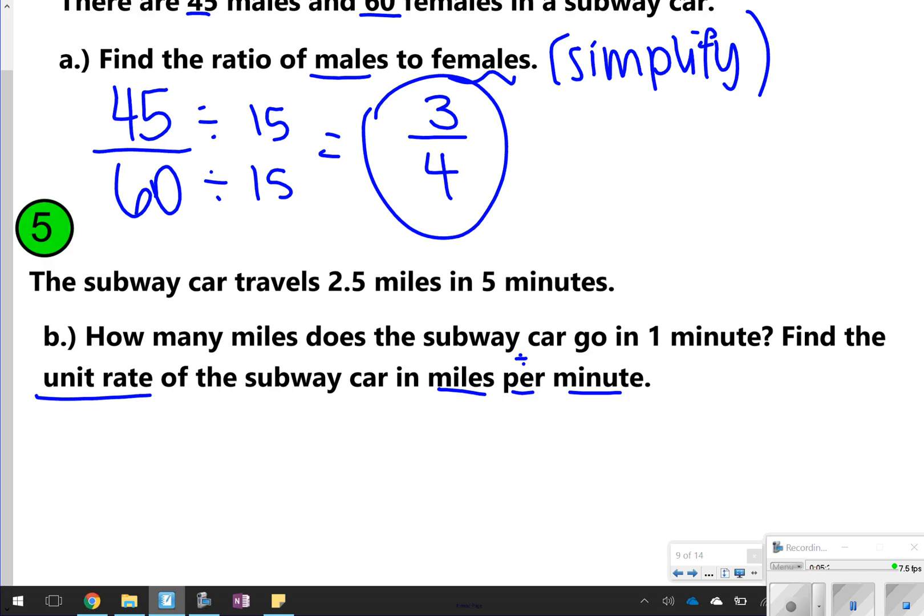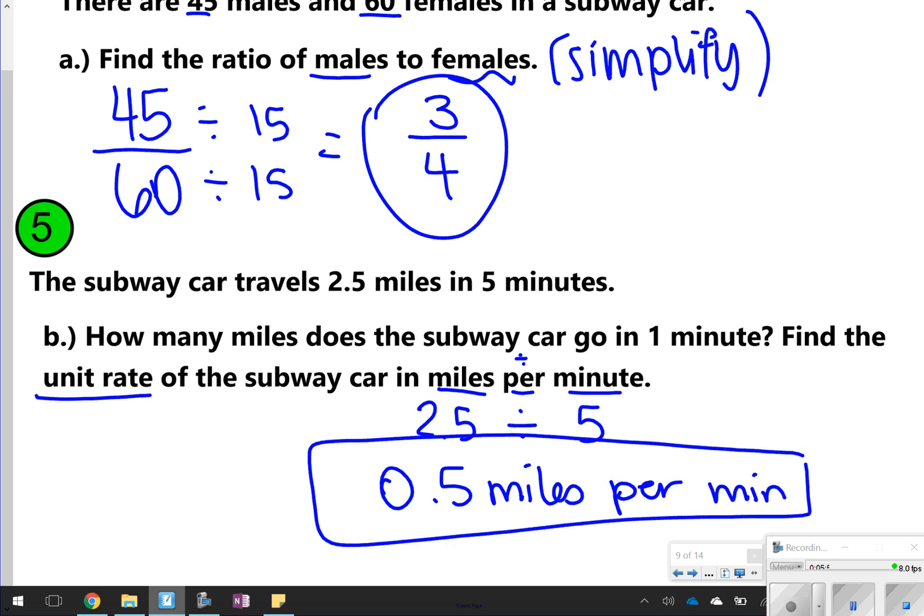Number 5 talks about miles per minute, trying to find the unit rate. So what you should have done is you can take your calculator and do 2.5 miles divided by 5 minutes. And when you do that, you get 0.5. So your answer needs to be not just 0.5, it's 0.5 what? 0.5 miles per minute. So just make sure you add in the rates that go with that whenever you're working on finding unit rates.